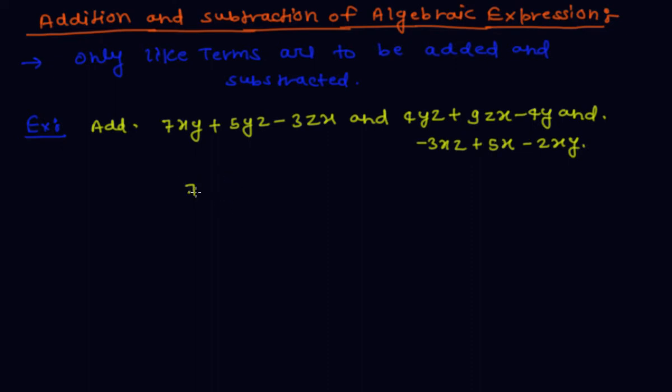First write all terms vertically. In second term 4yz, so 4yz are like terms with 5yz, so written below as 5yz. 9zx is a like term with 3zx. Minus 4y is unlike term with all these terms, so written as separate minus 4y.